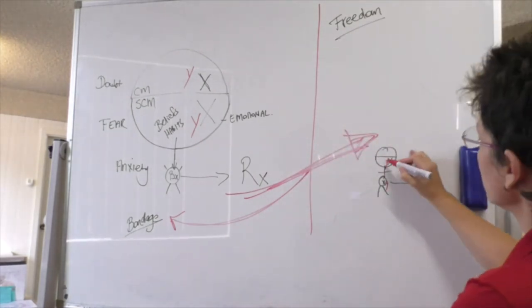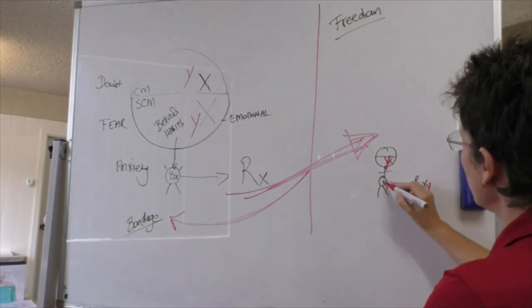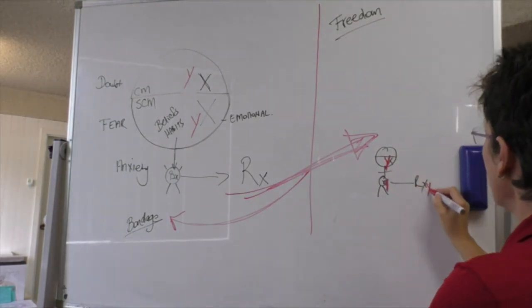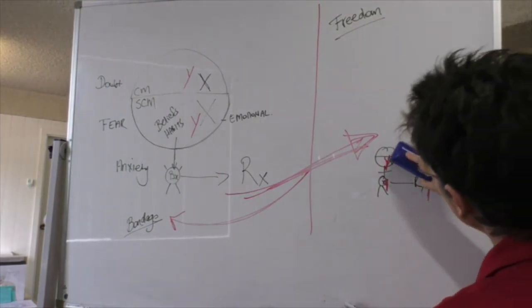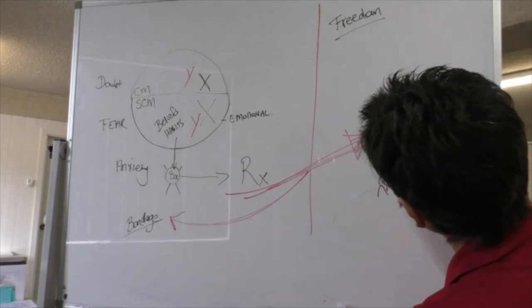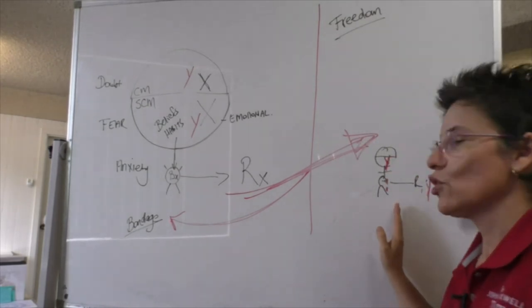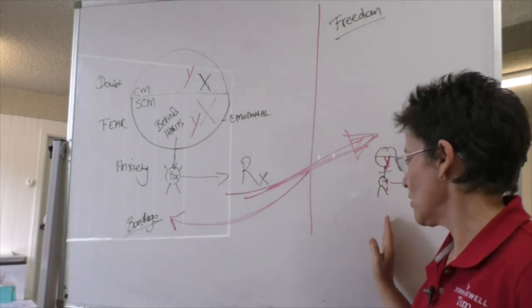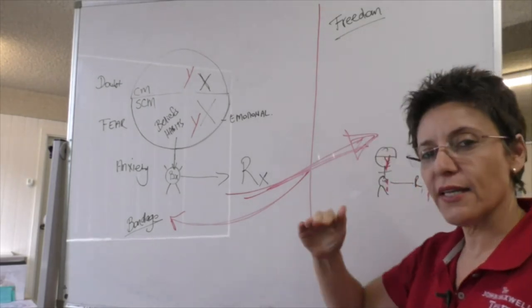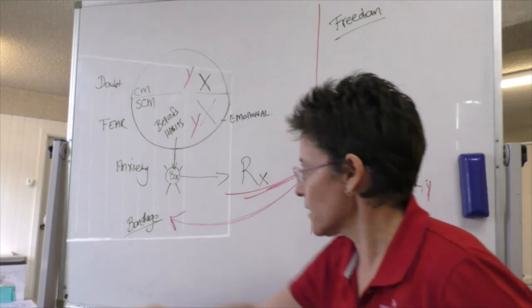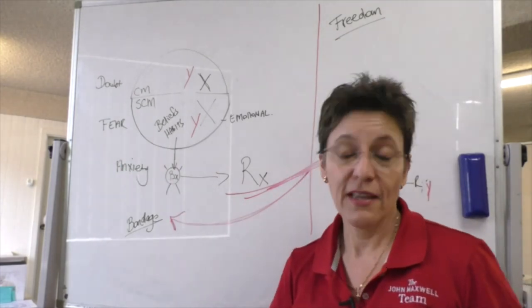Because through repetition. Y becomes your dominant paradigm. Your dominant behavior. And your dominant results. And the X. Almost kind of disappears. Then this becomes. Your new comfort zone. And when we want to grow. And get better from here. We basically start the cycle all over again. And that's growth.